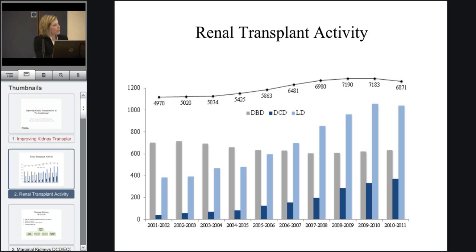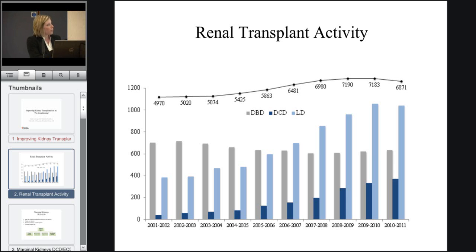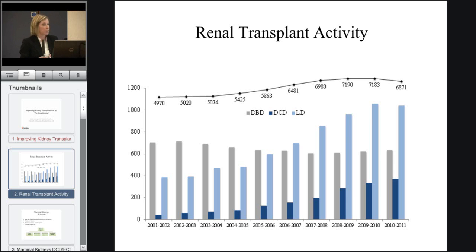In light blue, it's the living donors. We've seen a significant increase in this donor type, especially over the last five years. In grey, we have our DBD, which is our donation after brain death, which is our traditional source of organ donors. In dark blue, DCD, which stands for donation after circulatory death. These are kidneys that are taken out after the heart has stopped.